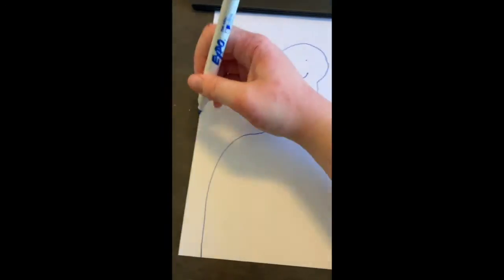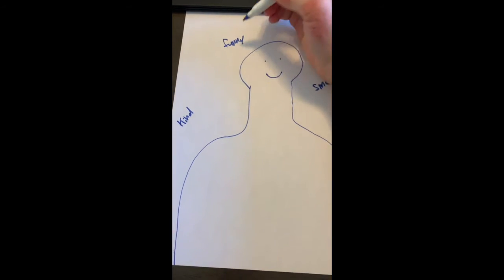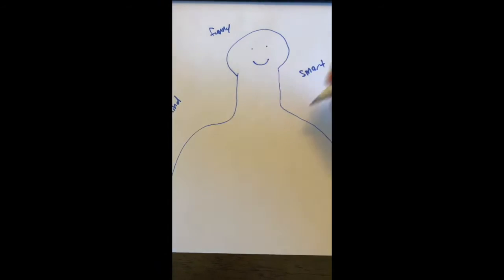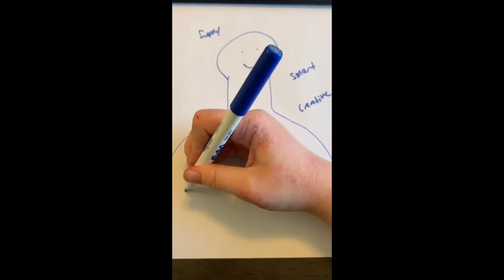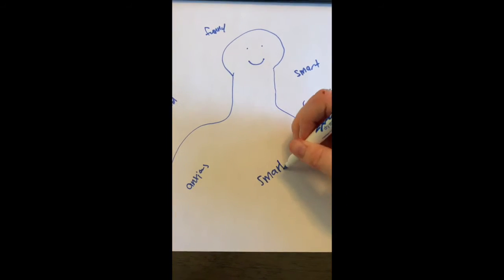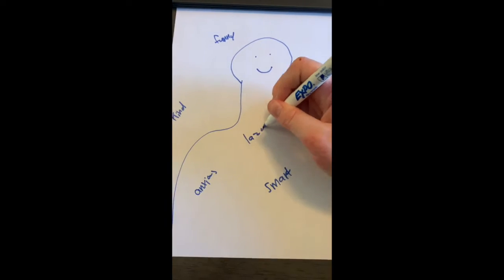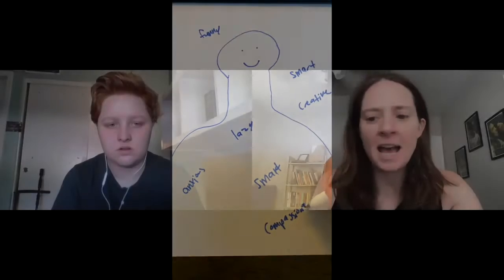On the inside of the outline, you're going to write as many words as come to mind that can reflect the way you see yourself. On the outside of the outline, write words that reflect the way other people see you. Some of these words will be different; others can absolutely be the same. You just want to have a diverse collection of descriptive words.